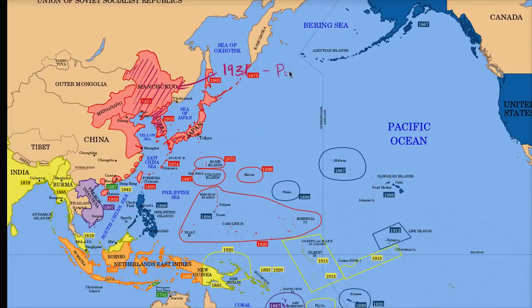When we call something a puppet state, it means that there's a government there and they kind of pretend to be in charge, but they're really controlled like a puppet by someone else — and in this case, it is the Empire of Japan.